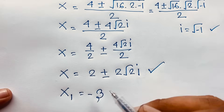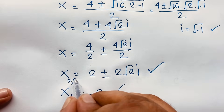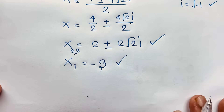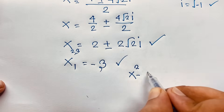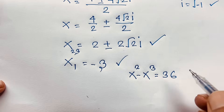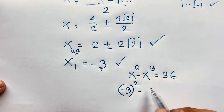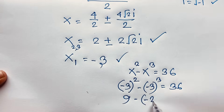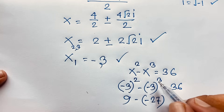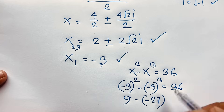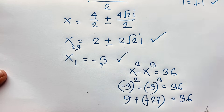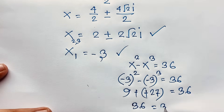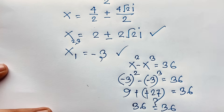So our final answers are: x equals negative 3 as the real solution, and x equals 2 plus or minus 2 root 2 i as complex solutions. Let's verify using the real solution: negative 3 whole squared minus negative 3 whole cubed equals 9 minus negative 27. Since it's an odd power, it's negative, so minus times minus gives plus, then plus times minus gives minus, giving 9 plus 27 equals 36. Left hand side equals right hand side. Thank you all — if you enjoyed this math problem, please subscribe to my channel and like my video. Goodbye, take care.